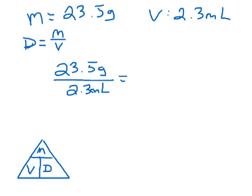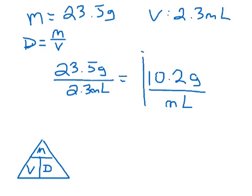I'm going to ask a volunteer in class to go ahead and carry out this calculation, which would be 23.5 divided by 2.3. The answer is 10.2 — 10.2 grams per milliliter, and that would be your answer.